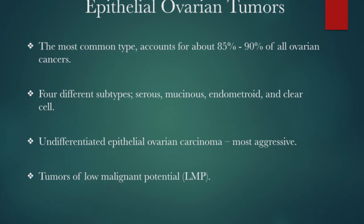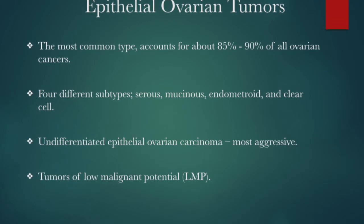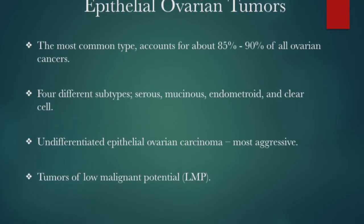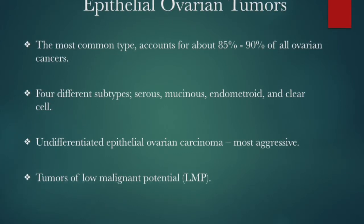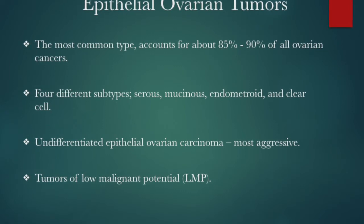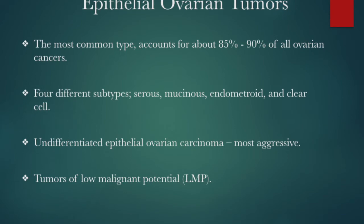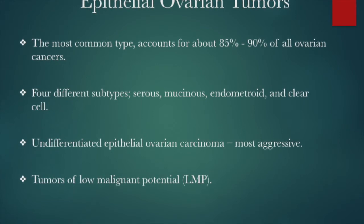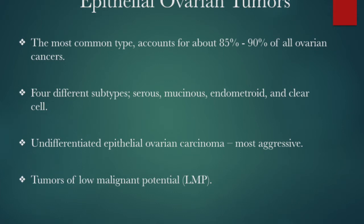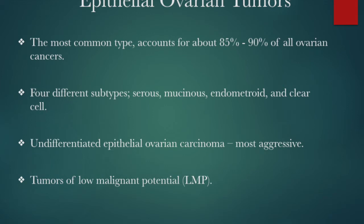Epithelial ovarian carcinomas are also given a grade and a stage. Tumors can be a grade 1, 2, or 3. Grade 1 will look the most like normal tissue, and grade 3 will look the least like normal tissue and is most likely to metastasize. Grade 2 will look and act somewhere in between grades 1 and 3. The stage describes how far the cancer has spread from where it originated in the ovary. The stages are A, B, and C, with A being the best case scenario with the tumor remaining inside the ovary, and C being the worst with the cancer spreading to other organs.